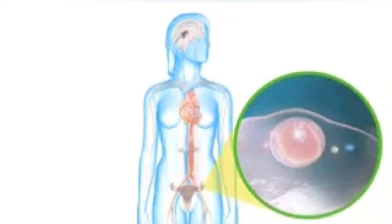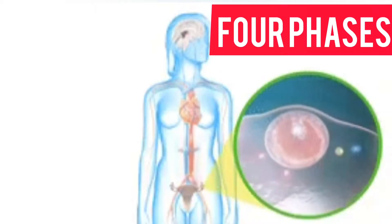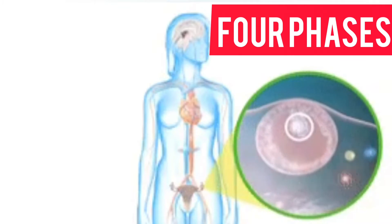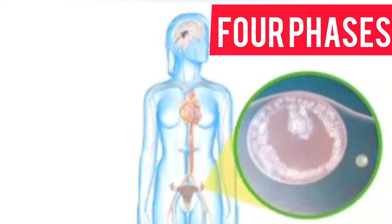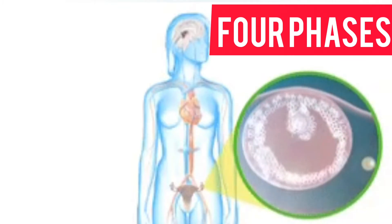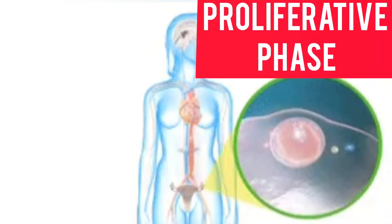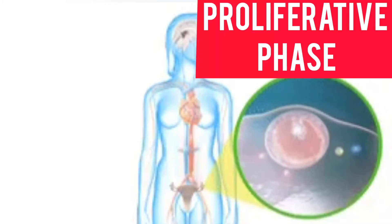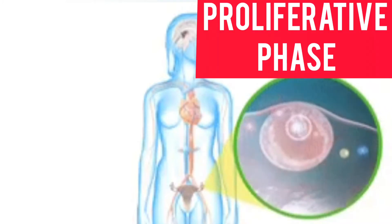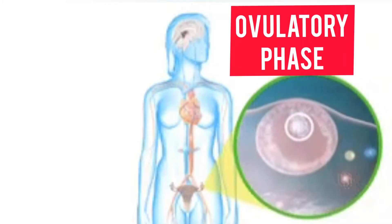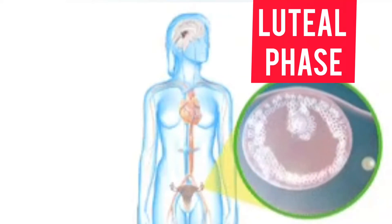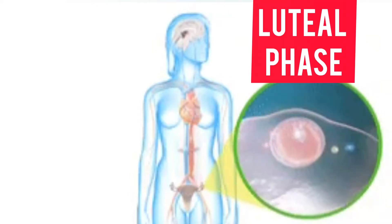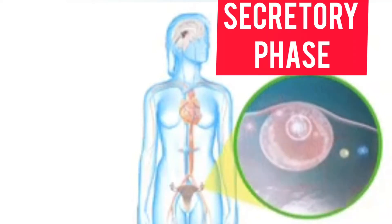The menstrual cycle has four different phases: the menstrual phase, the follicular phase (also known as the proliferative phase), the ovulatory phase, and finally the luteal phase or the secretory phase.